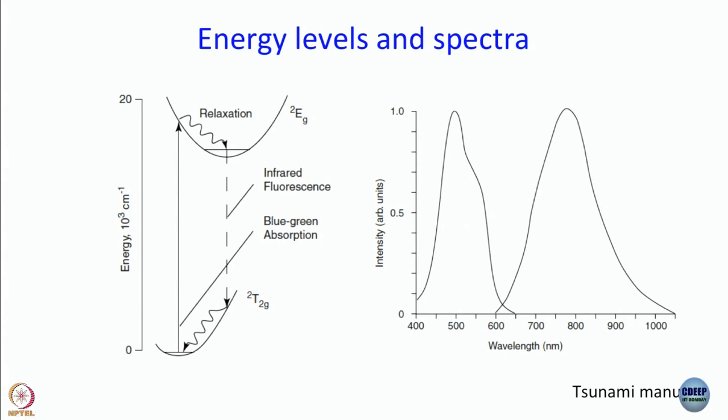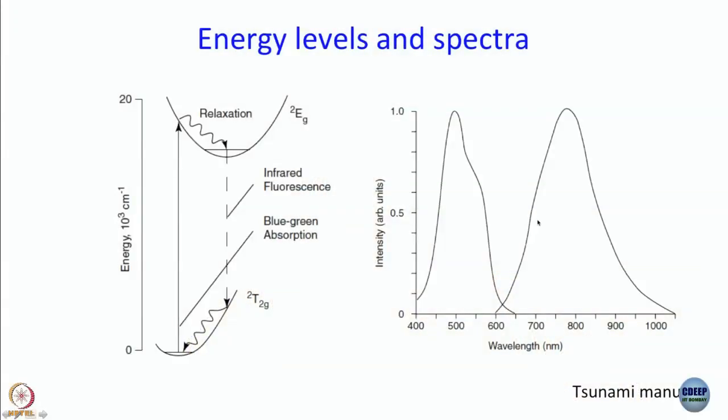Looking at the energy level diagram, this is a four-level system, so we expect CW output from a Ti:sapphire laser — and it does lase CW intrinsically. Mode locking then takes place because of the Kerr lens effect. The laser starts in CW mode; some disturbance in the cavity kick-starts pulsed operation.